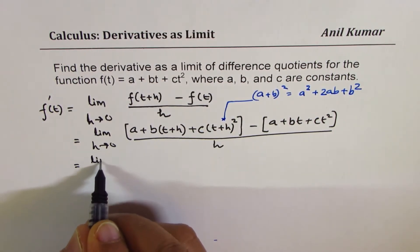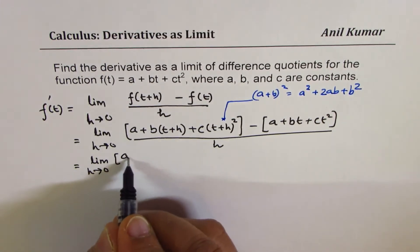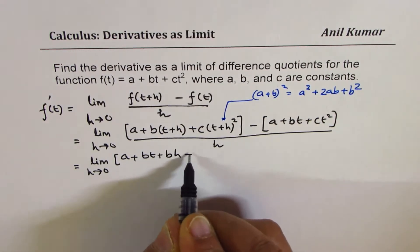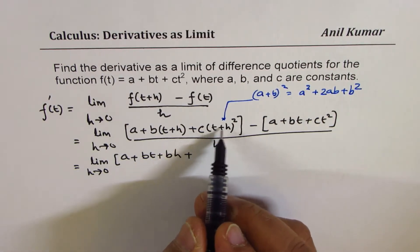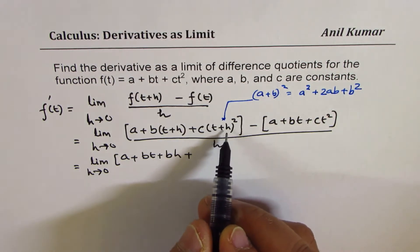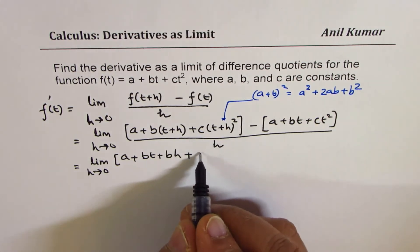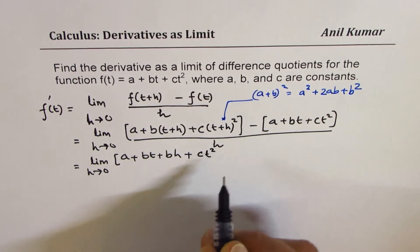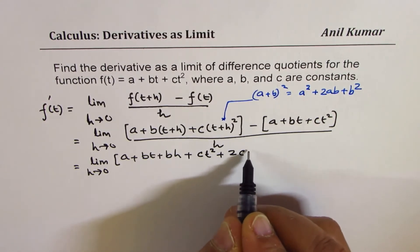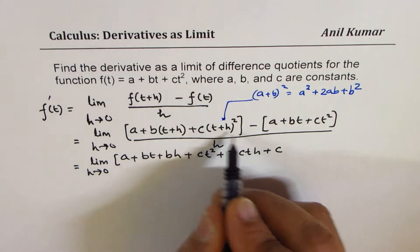We get limit h approaches 0, we get a plus bt plus bh plus, so we get 3 terms. First is t square, then 2 times th and then h square. Expanding, we get c times t square plus 2 times cth plus c times h square.